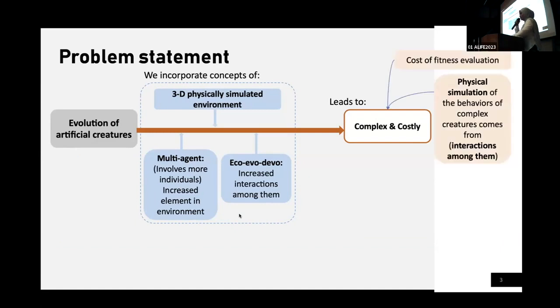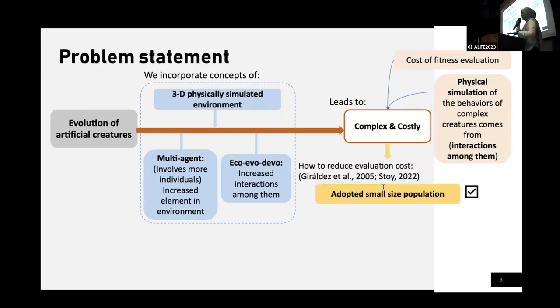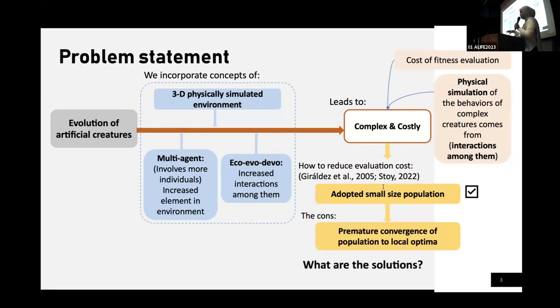Therefore, the reduction of evaluation costs in the evolutionary computation has actually been discussed quite widely. And by adopting a small population size is often used as an ad hoc way to resolve the problem, but it can actually cause premature convergence to happen in the evolution of creatures. So what are the possible solutions to these problems?